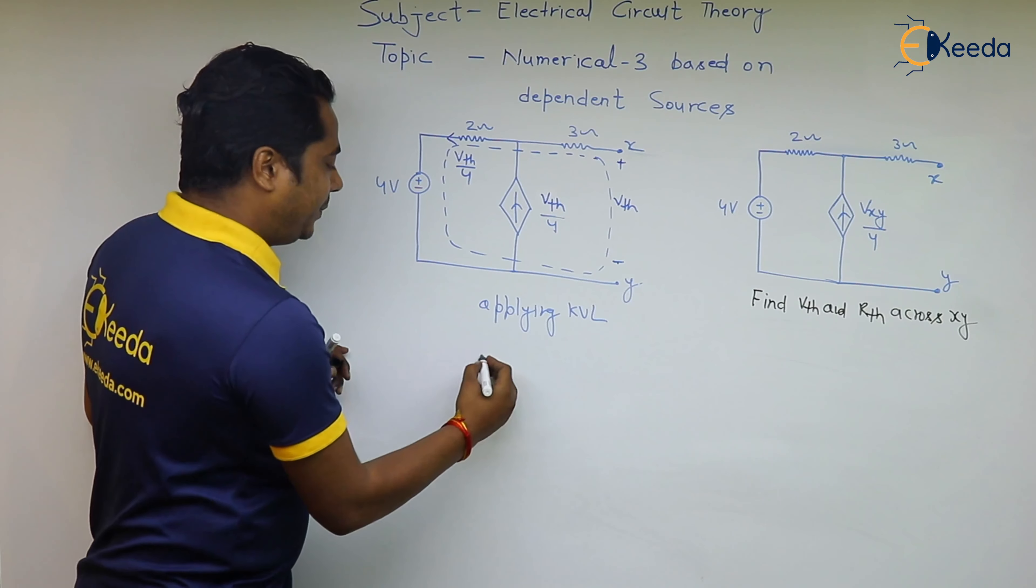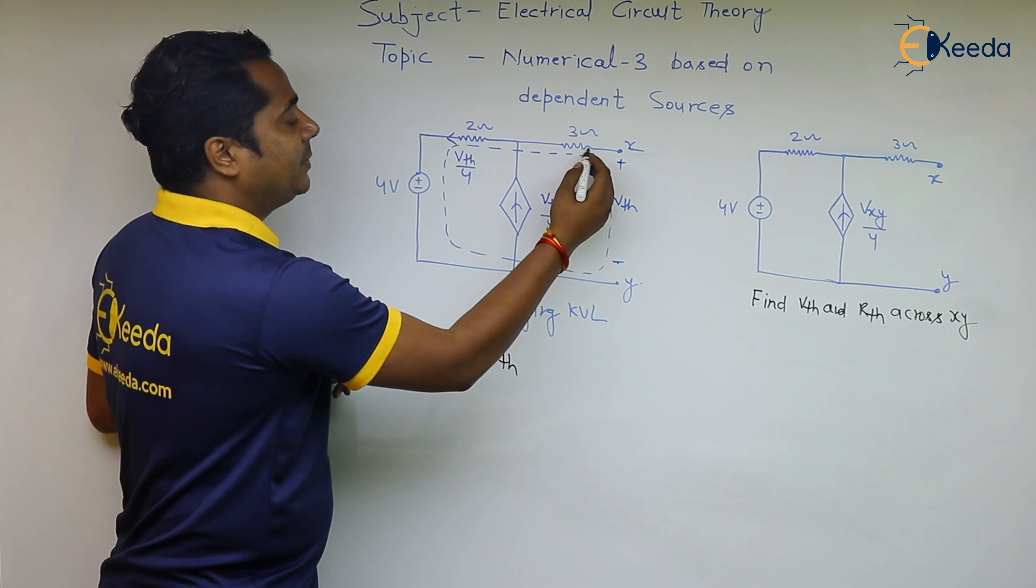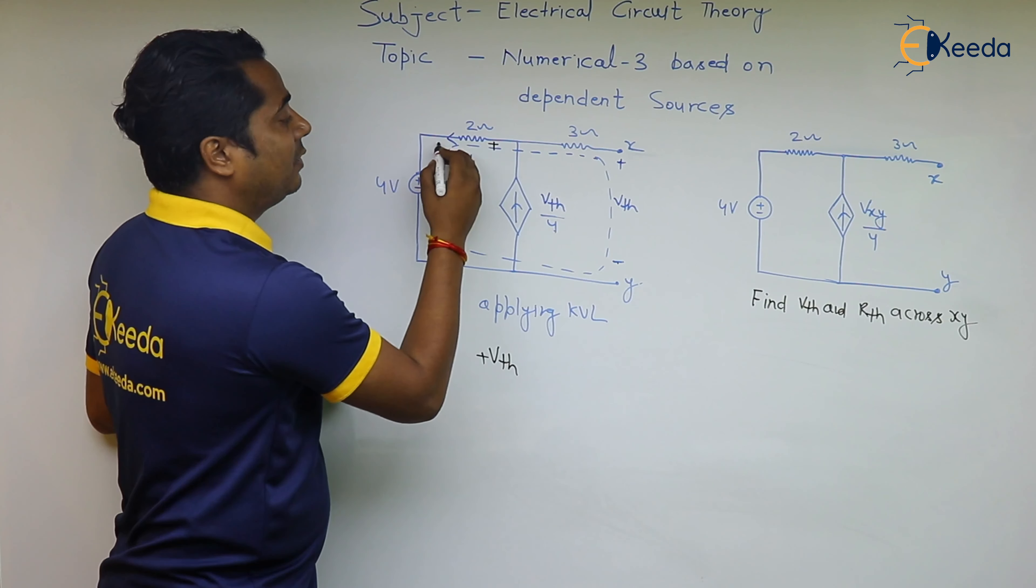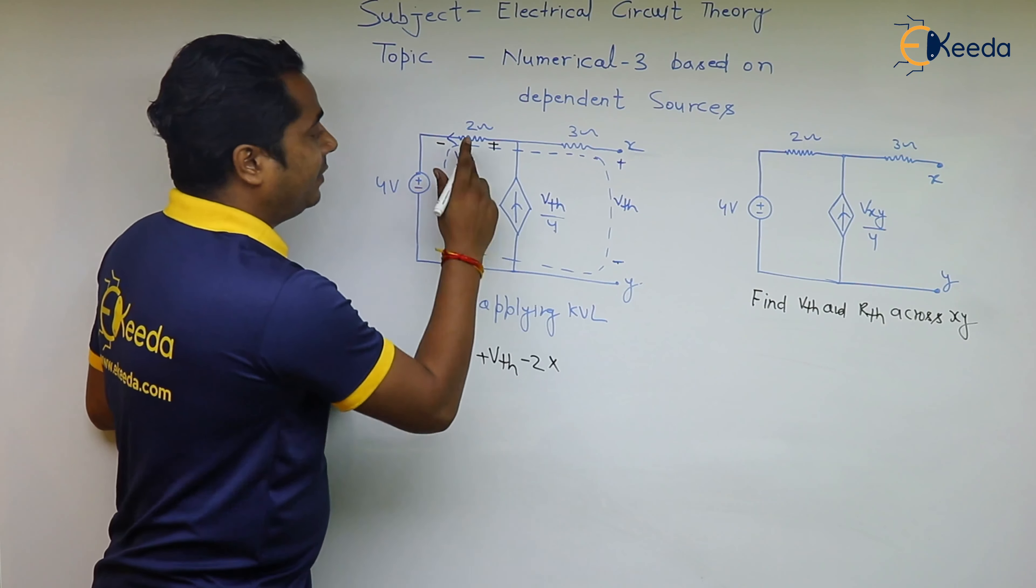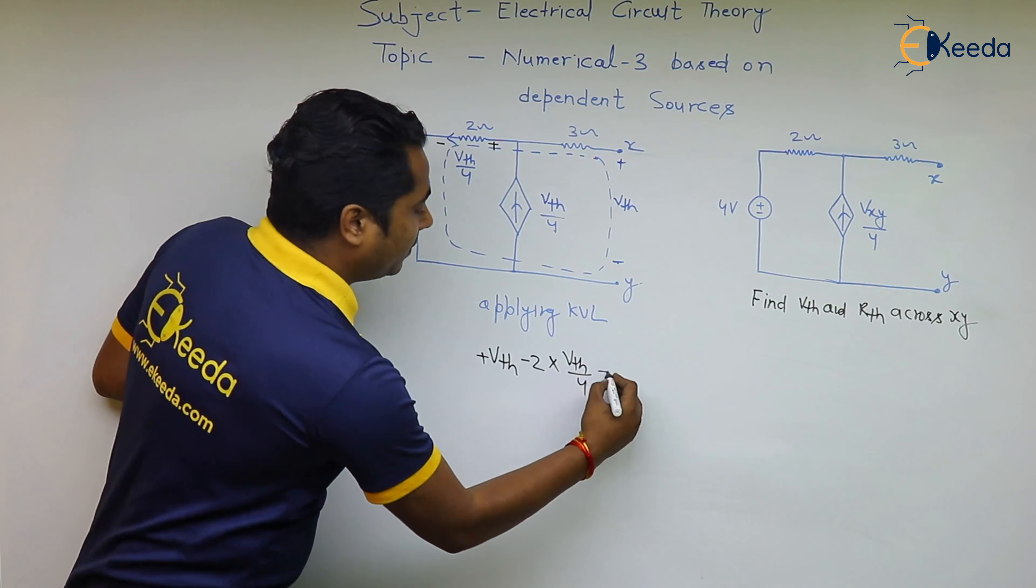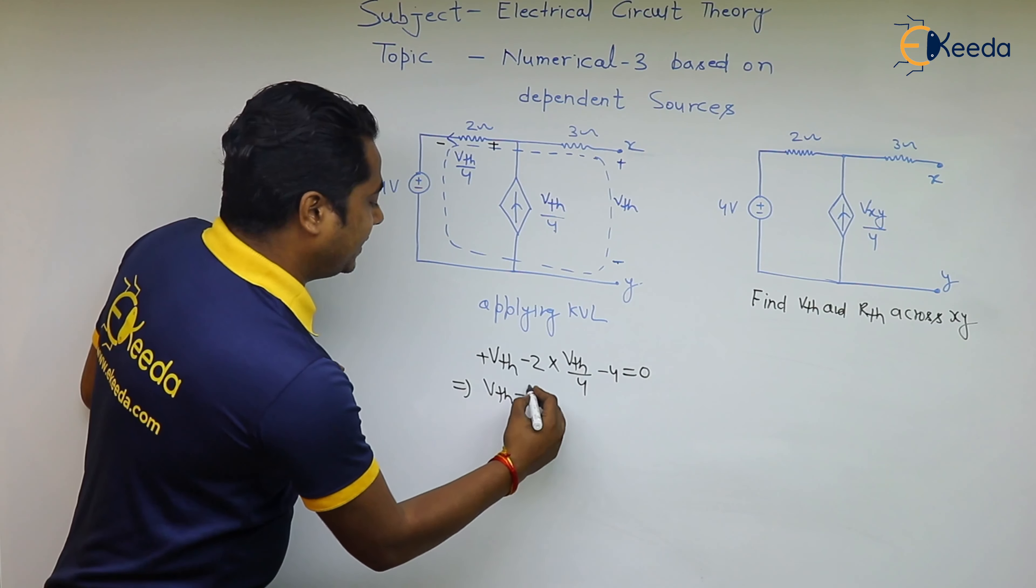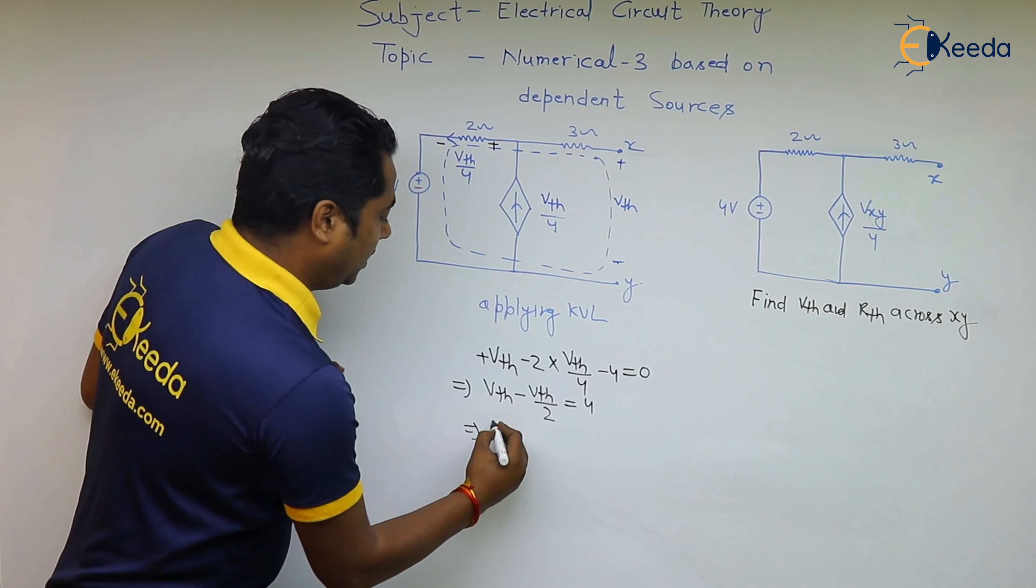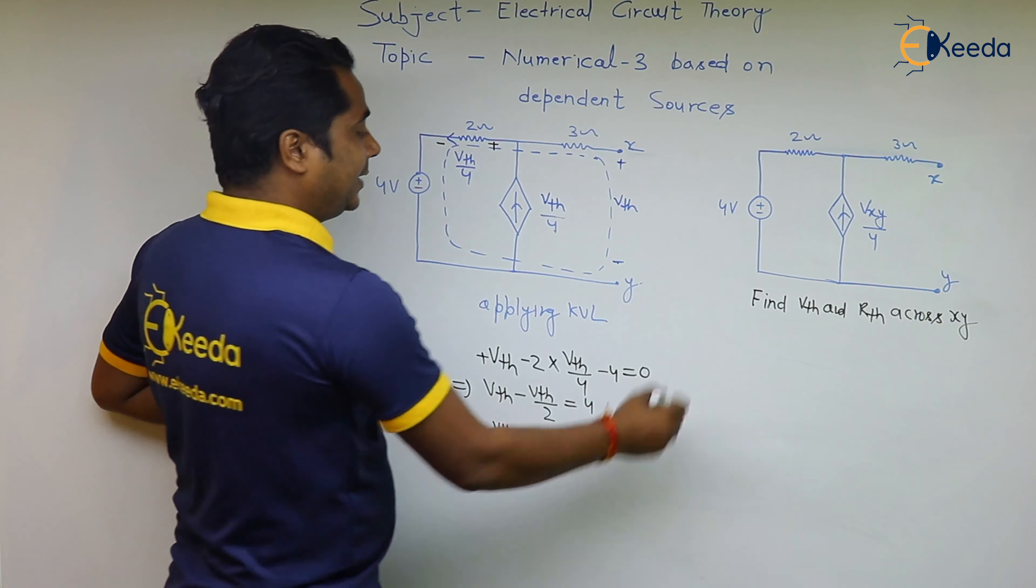Applying KVL, I'm taking from here: minus 2 plus Vth. There will be no drop in this because there is no current, but here this is plus, this will be minus. So minus 2 into current Vth by 4 minus 4 is equal to 0. Vth minus Vth by 2 is equal to 4.